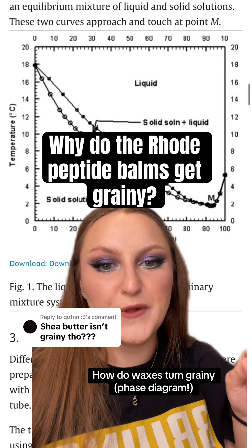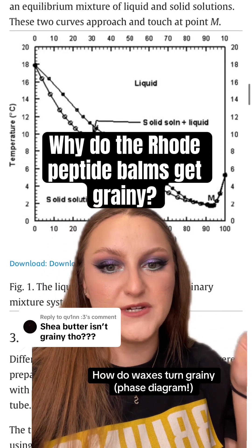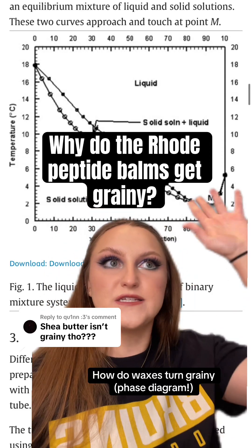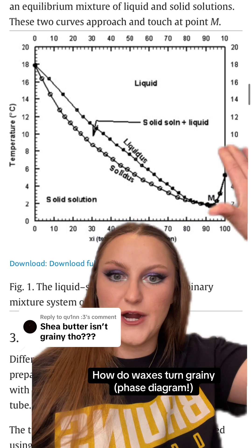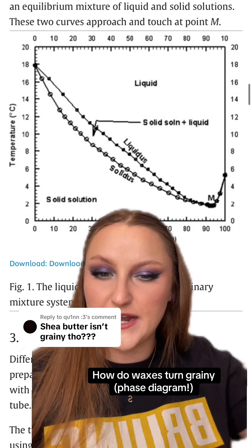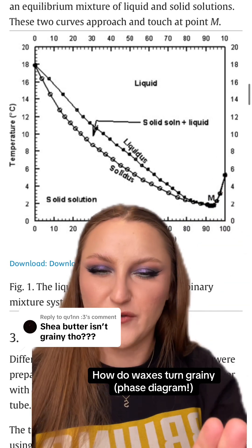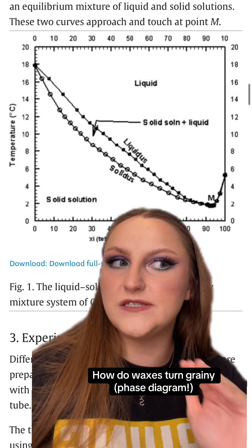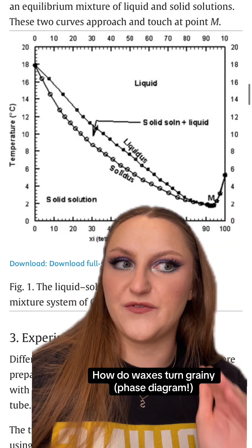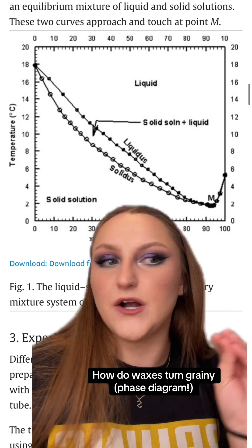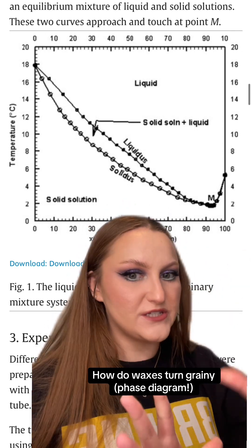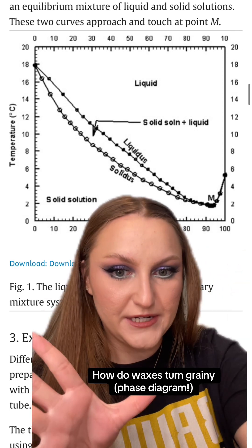So just to explain from a material science perspective, this is a phase diagram. This is the phase diagram for paraffin wax. It's similar but a little bit different — not the exact ingredient, but just to get the general idea.